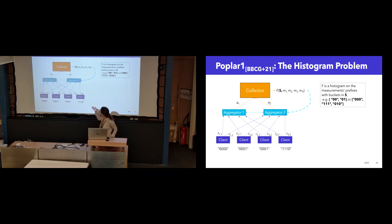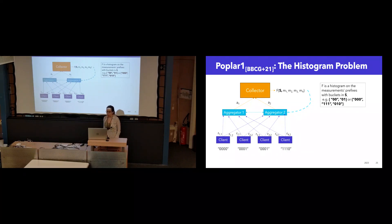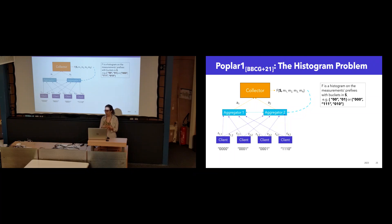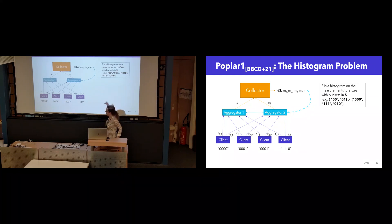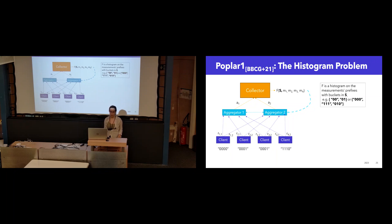So in order to solve the heavy hitters problem, the full Poplar protocol runs Poplar1 over and over again using different values of S and different prefix lengths. And the trick is, in order to minimize client interaction, we want to be able to compute many histograms for different values of S using the same client reports. And so that's what Poplar1 does that PRIO3 doesn't. The other difference is that PRIO3 requires the buckets to be known to the clients, and Poplar1 makes sure that this data is private because it can include some privacy leakage if it's run multiple times the way it is in Poplar.